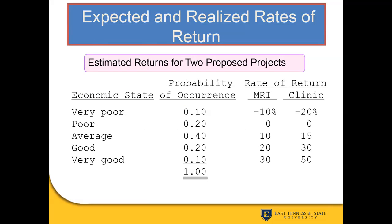Moving from probability into expected and realized rates of return, I want to go over this project proposal quickly. We have economic states ranging from very poor to very good, with rates of return for two different projects — investing in an MRI machine or investing in a new clinic. We'll use this data going forward for calculations, so you may want to screenshot this slide or print it off and keep it with you.